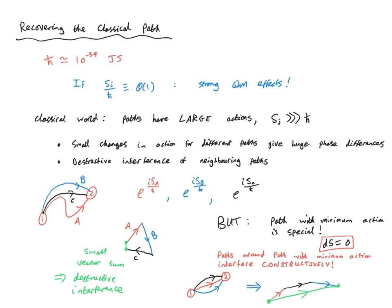And so in the end, this is basically the derivation of the principle of least action known in classical physics. It's really a consequence of the constructive quantum interference around the path with the least classical action, and the destructive interference of other paths because h-bar is so small. Basically, the world becomes strictly classical as h-bar goes to zero. This is a really profound finding. What Feynman originally showed is that we can think of the classical world as a limit of the quantum world. The classical paths we observe and the principle of least action — equivalent to Newton's second law — is actually a consequence of quantum interference of paths around the path with the minimum action. From very basic principles, we've basically derived classical physics.